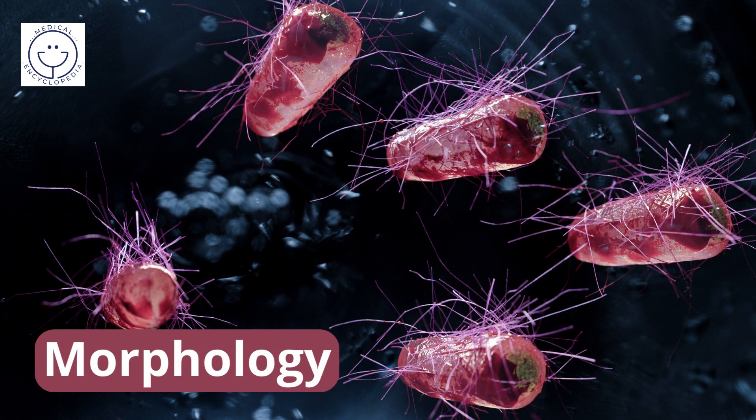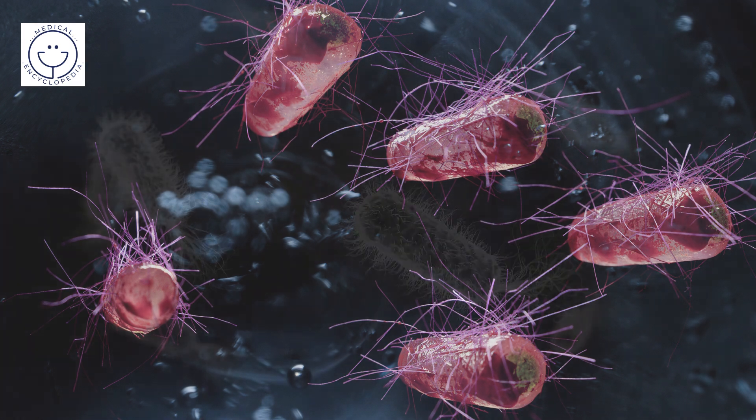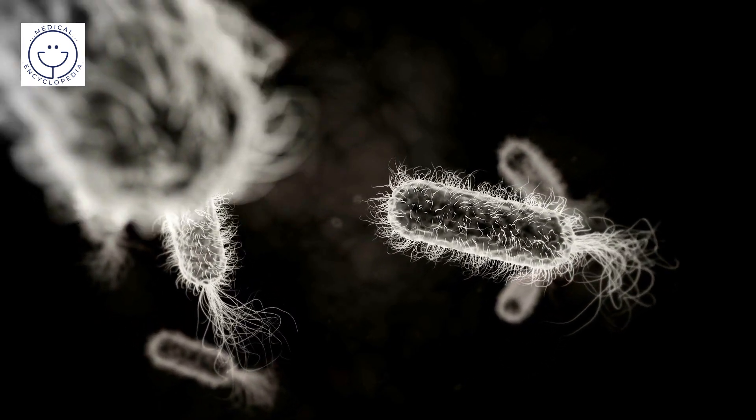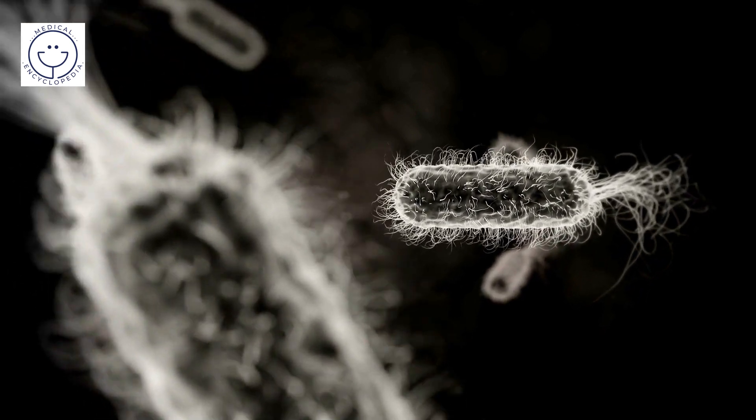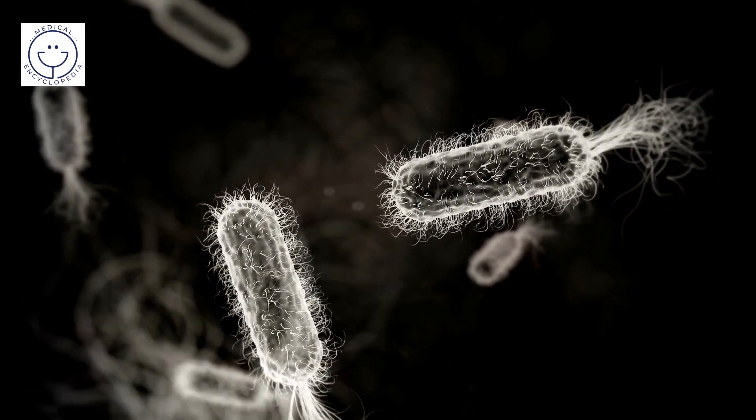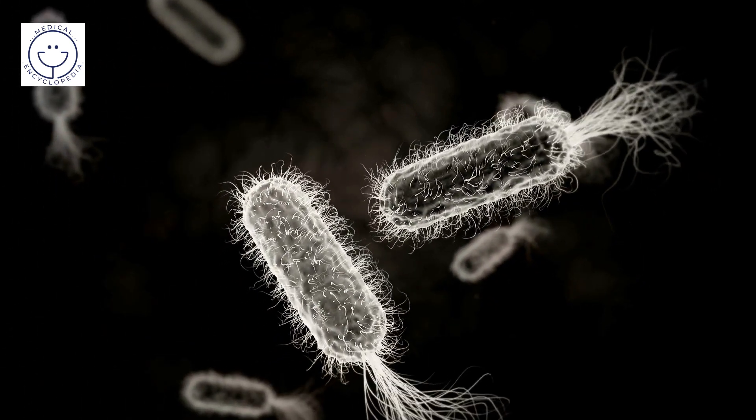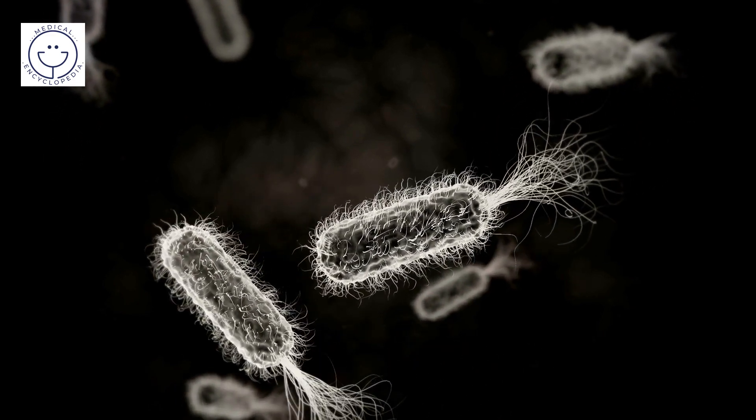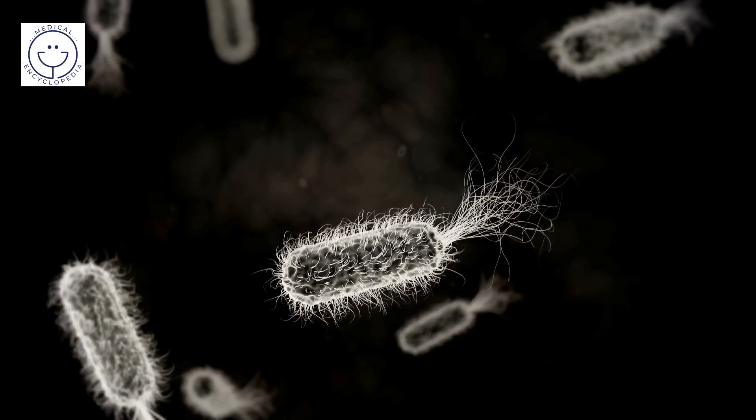Morphology. E. coli is a gram-negative, facultative anaerobe, non-sporulating coliform bacterium. Cells are typically rod-shaped and are about 2.0 micrometers long and 0.25 to 1 micrometer in diameter, with a cell volume of 0.6 to 0.7 cubic micrometers.